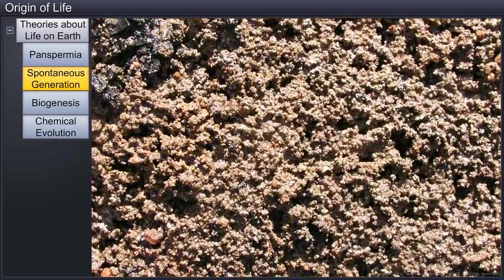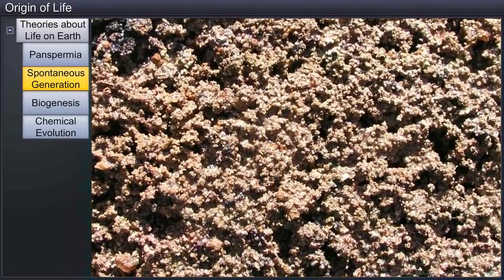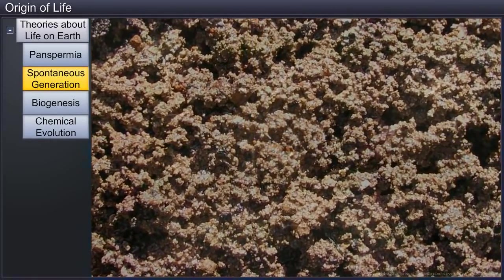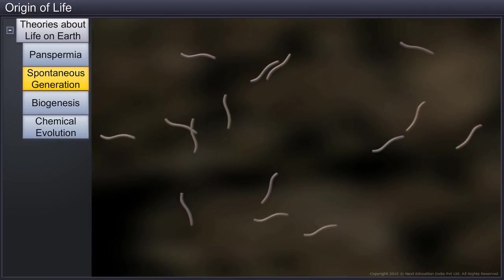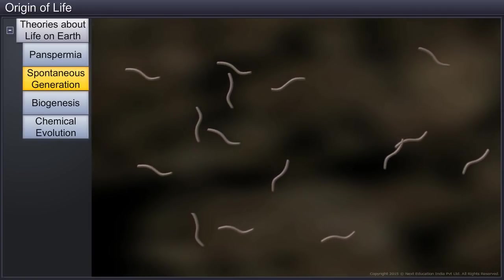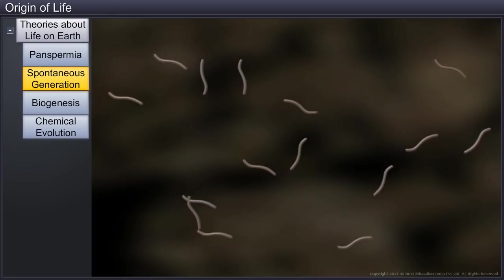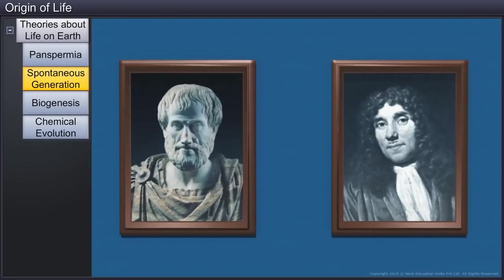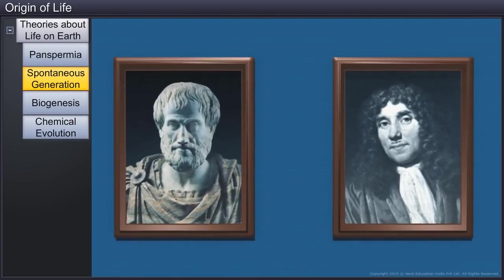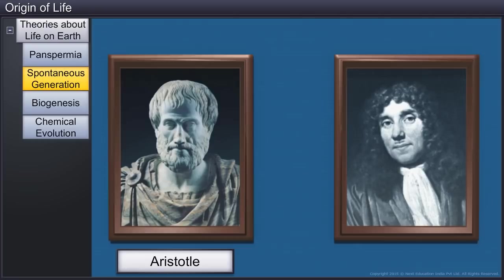Another belief was that life arose from inanimate things. The theory of spontaneous generation assumed that life came out of non-living, decaying and rotting matter, such as stones, straw and mud. Even famous Greek thinker and philosopher Aristotle believed in this theory.